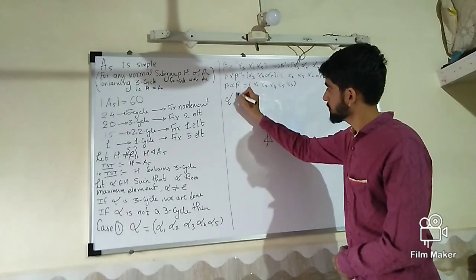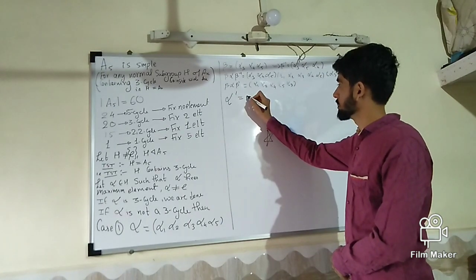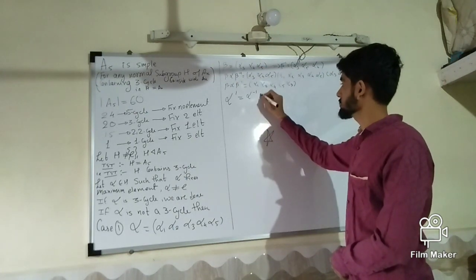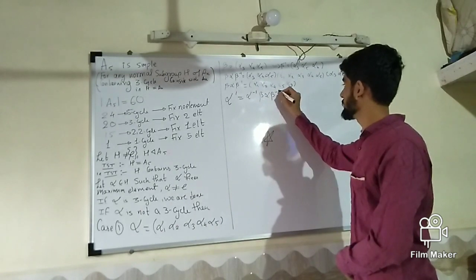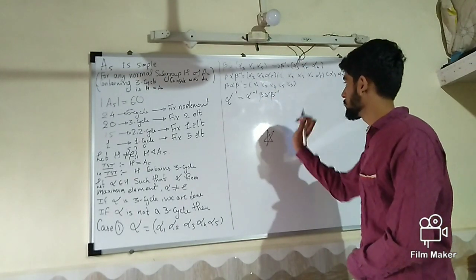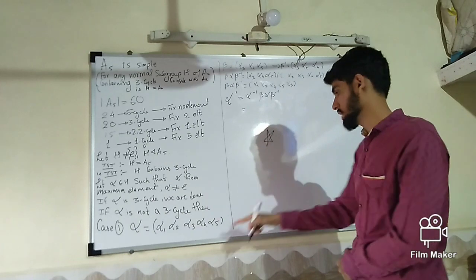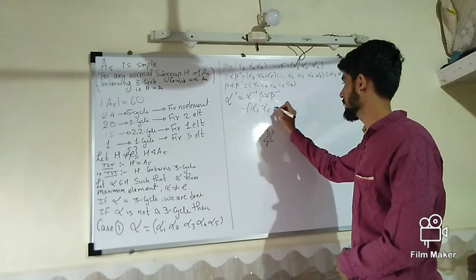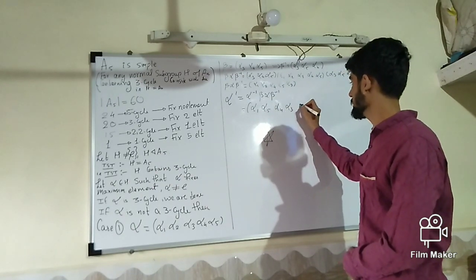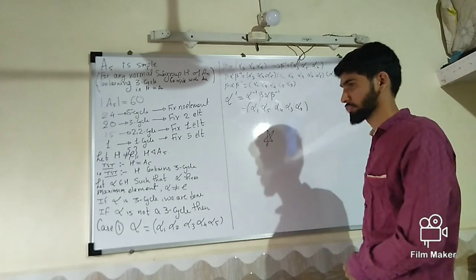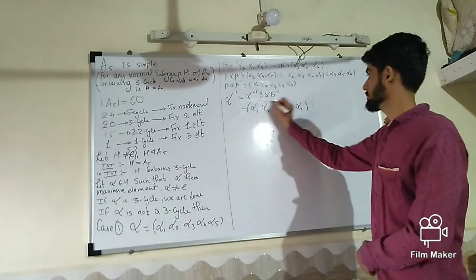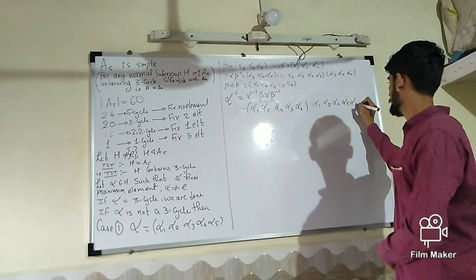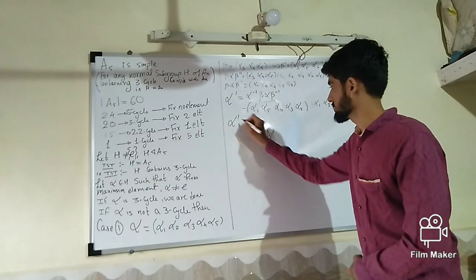We construct another element alpha-dash defined as alpha⁻¹ · β · α · β⁻¹. Alpha inverse, since alpha = (α1 α2 α3 α4 α5), is (α1 α5 α4 α3 α2). We then compose this with β·α·β⁻¹ which we computed earlier, giving us alpha-dash written as (α1 α2 α4 α5 ...) after composition.